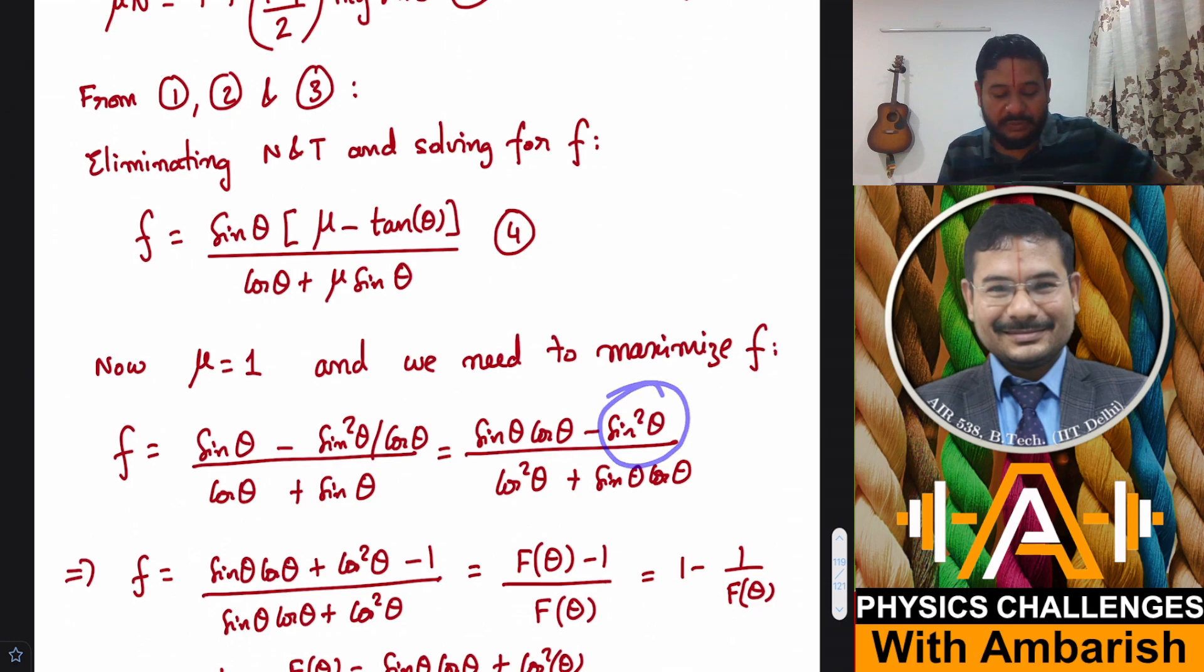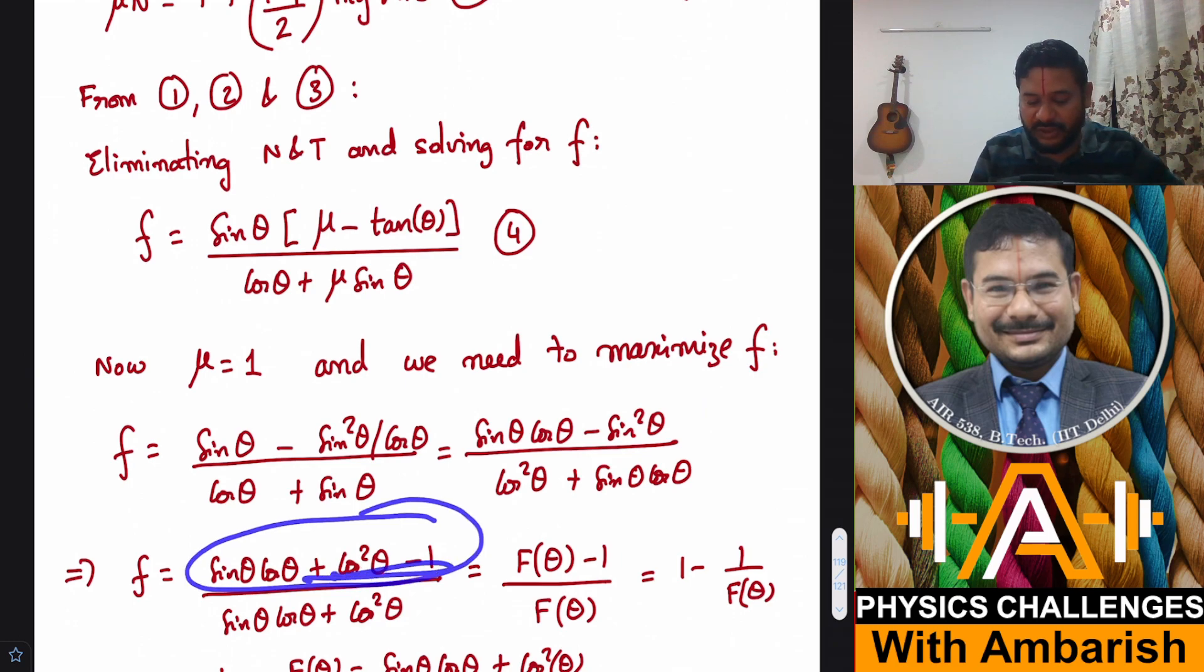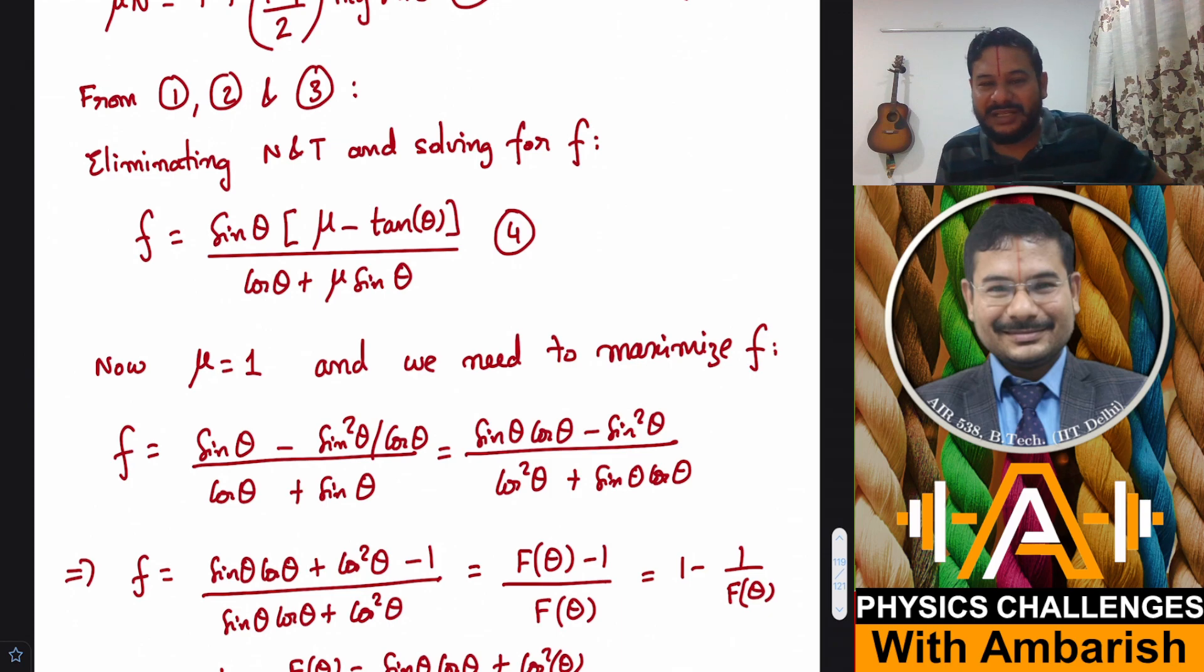So I can write sin square theta as 1 minus cos square theta, so numerator becomes sin theta cos theta plus cos square theta minus 1, and this is the same thing in denominator. Let's call this as F of theta. This becomes F of theta minus 1 divided by F of theta, where F of theta is this part. You can further simplify this as 1 minus 1 upon F theta.